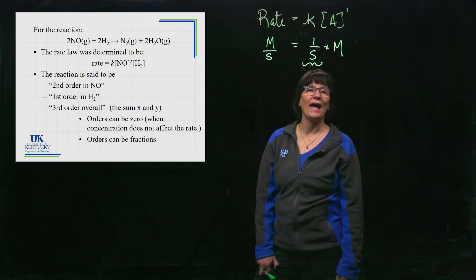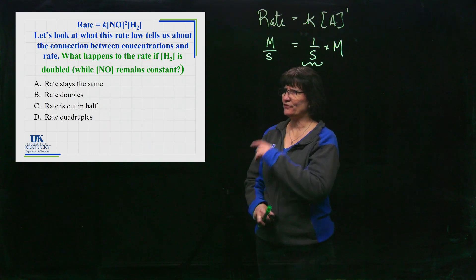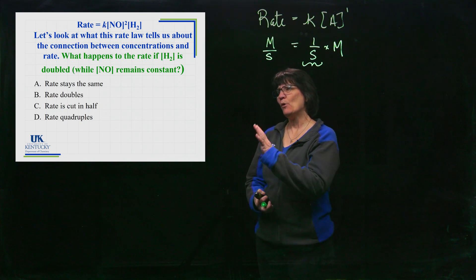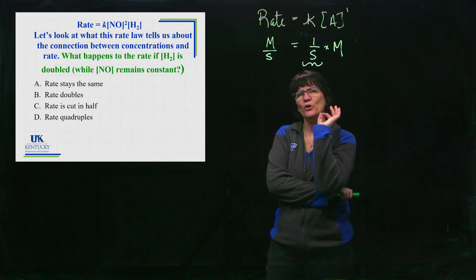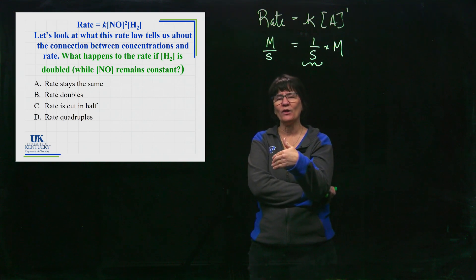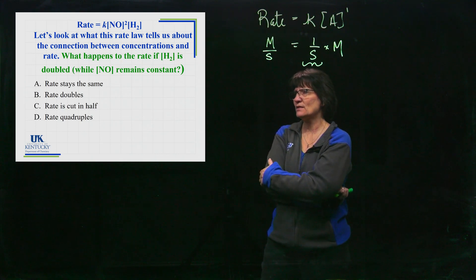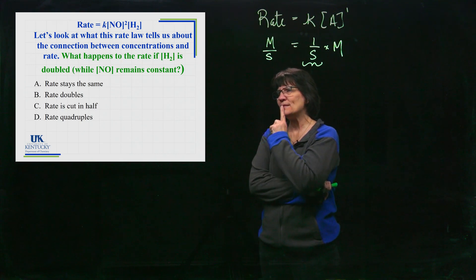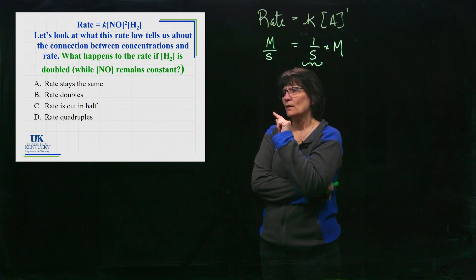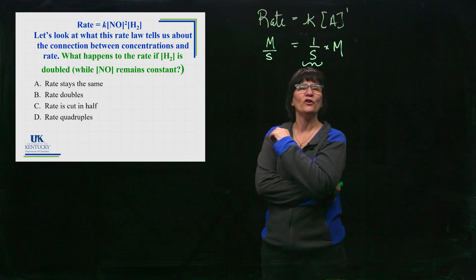Now let's use that rate law. When you know the order, it tells you how changing the concentration will affect the rate. Let's think about this: what happens if you run an experiment twice, and in the second run the H₂ concentration is doubled while the NO stays the same?